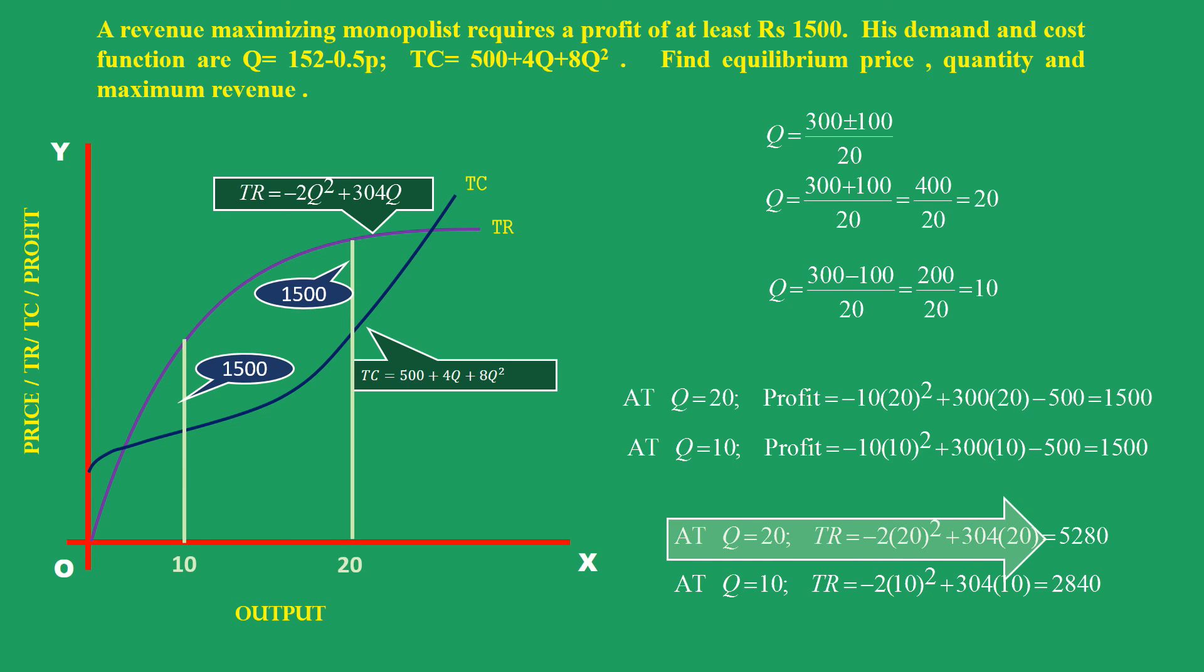At Q = 20, total revenue is maximum. Revenue maximizing output is 20 units. Monopolist will produce 20 units.